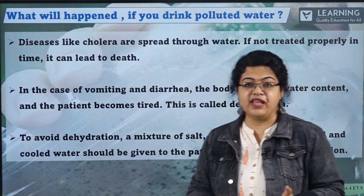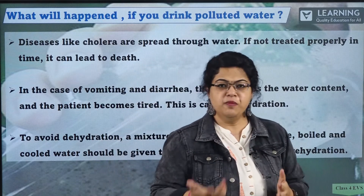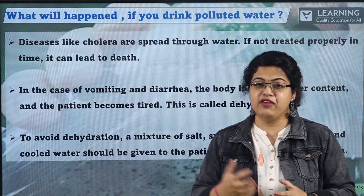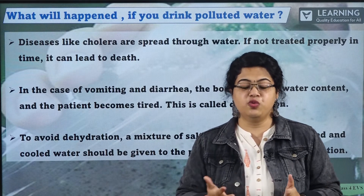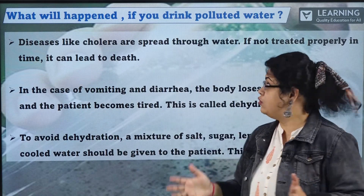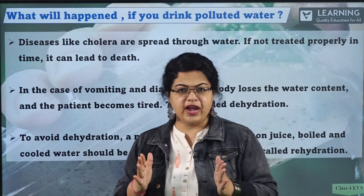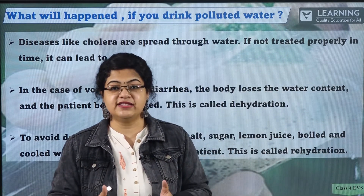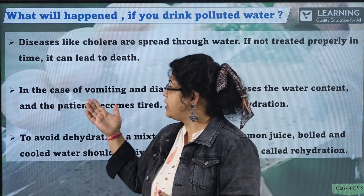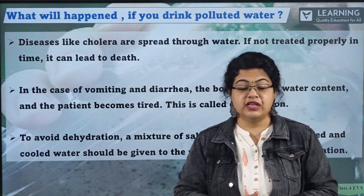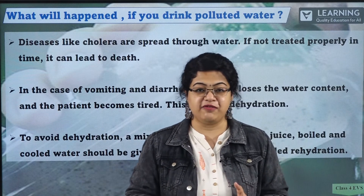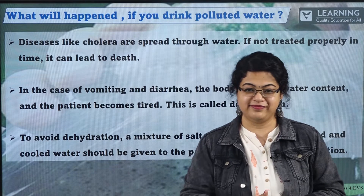What will happen if you drink polluted water? You must have heard Mommy saying, don't drink that water — you will fall sick. If you drink contaminated, dirty water you will fall sick. The first disease — cholera — is spread through water. It is a very bad disease, and if not treated properly, it can lead to death. So cholera is a very deadly disease. To prevent ourselves, we must not pollute water.